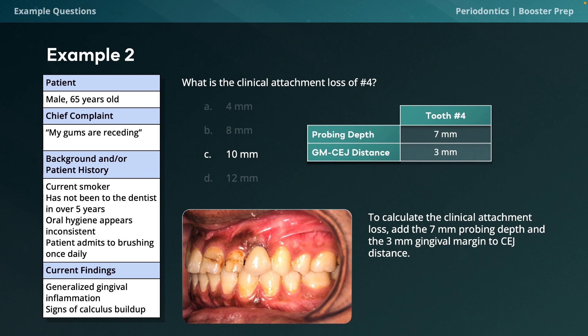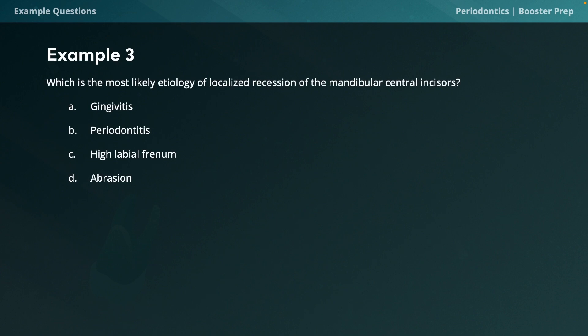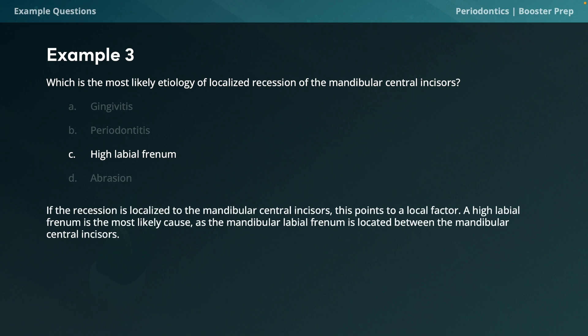Example question 3: Which is the most likely etiology of localized recession of the mandibular central incisors — (A) gingivitis, (B) periodontitis, (C) high labial frenum, or (D) abrasion? The correct answer is C. Since the recession is localized to the mandibular central incisors, this points to a local factor. A high labial frenum is the most likely cause, as the mandibular labial frenum is located between the mandibular central incisors — a common anatomic characteristic causing recession.